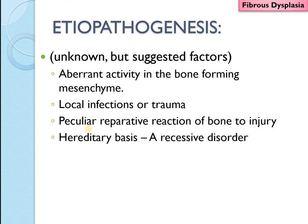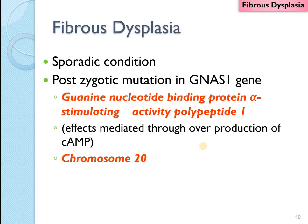Fibrous dysplasia has a very peculiar reparative reaction because the bone gets arrested in the woven bone stage — normally, woven bone gets converted into lamellar bone, but in this case it gets arrested. There is also a hereditary basis, as some cases have been reported to have a recessive disorder. The most accepted reason is a sporadic mutation of the GNAS1 gene located on chromosome 20. GNAS1 stands for guanine nucleotide binding protein alpha stimulating activity polypeptide 1, which has its effects in bone formation through the production of cyclic AMP.